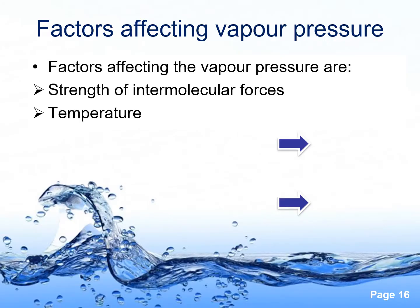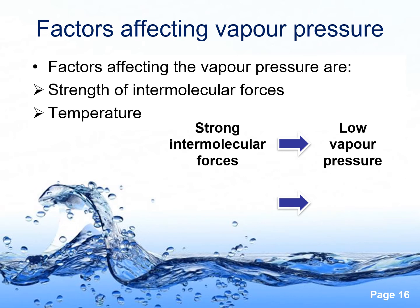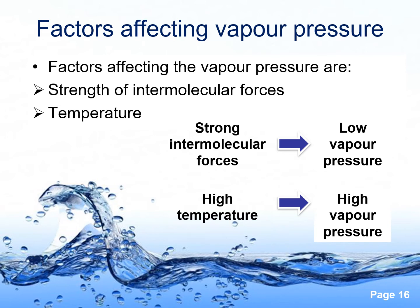There are two factors affecting vapor pressure: intermolecular forces and temperature. The stronger the intermolecular forces, the lower the vapor pressure, because high energy is needed to overcome the strong attraction between the liquid molecules, making it difficult for the liquid molecules to change to vapor. The higher the temperature, the higher the vapor pressure, because high temperature increases the kinetic energy of the molecules, making it easier for the liquid molecules to convert to vapor or gas.